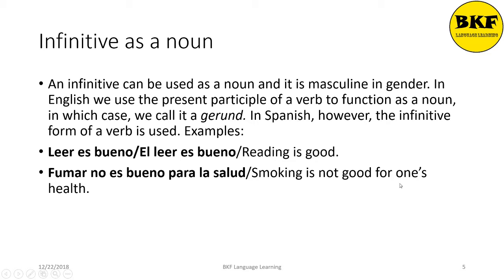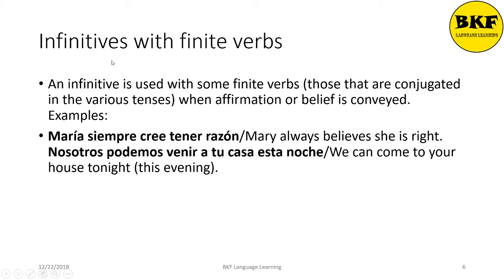The second use: infinitives with finite verbs. An infinitive is used with some finite verbs — those that are conjugated in the various tenses — when affirmation or belief is conveyed. For example, 'Mary always believes she's right' becomes 'María siempre cree tener razón,' where 'tener razón' literally means 'to have right.' Another example: 'We can come to your house tonight' becomes 'Nosotros podemos venir a tu casa esta noche,' where 'esta noche' means 'this night or this evening.'